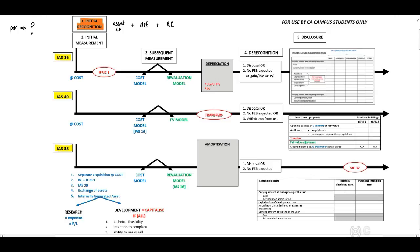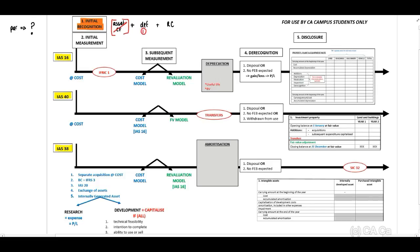When you receive a theory question and the marks are below 10, as a guideline there will most probably not be marks allocated to your asset definition in terms of your conceptual framework. However, this is still an important definition, so my recommendation is to start with the definition as per the standard — IAS 16, 40, or 38 — and always remember your recognition criteria.